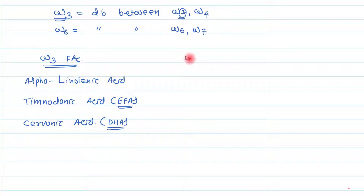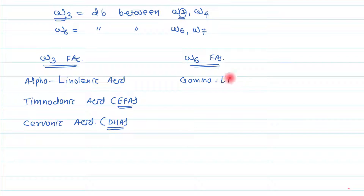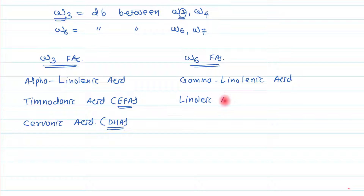On the other side, the examples of omega-6 fatty acids are: first, gamma-linolenic acid; second, linoleic acid; and third, arachidonic acid.